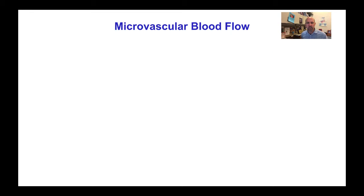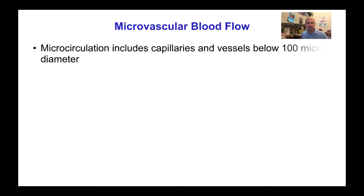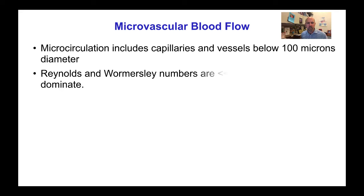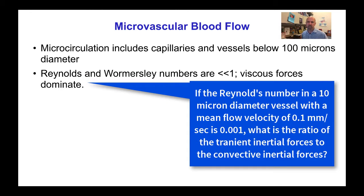Now let's consider some special features of blood flow in the microcirculation. The microcirculation includes the capillaries and blood vessels that are below about 100 microns in diameter. The Reynolds and Womersley numbers are much less than one in the microcirculation because both the diameters and the velocities are small, and therefore viscous forces are highly dominant and inertial forces can be neglected.